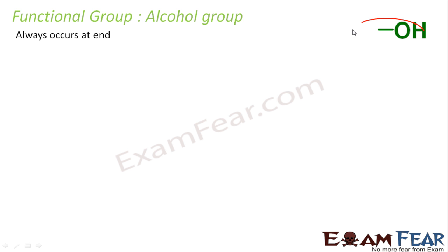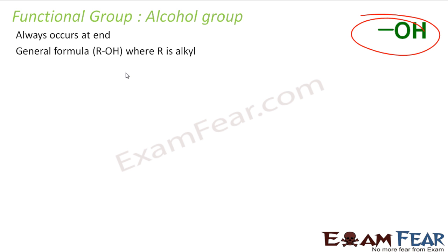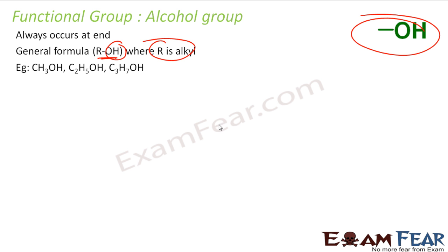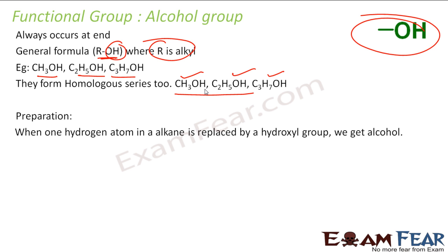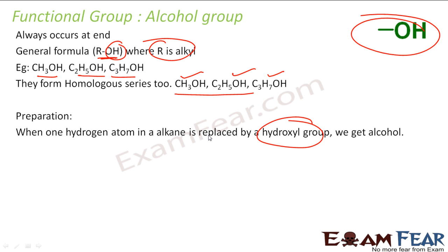The next group is the alcohol group. It also occurs at the end only and has an OH group. The general formula is ROH, similar to the halogroup, where R is any alkyl group and OH is the alcohol group. Examples are: CH3OH, C2H5OH, C3H7OH. These are my alcohols. They also form a homologous series. Preparation is simple: when one hydrogen is replaced by a hydroxyl group, we get alcohol.